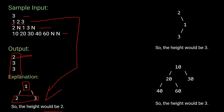For the second test case, 'N' denotes null nodes. Starting with 2 as the root node, the left child is null and the right child is 1, and the left child of 1 is 3 while the right child is null. So the height of this tree is 3.